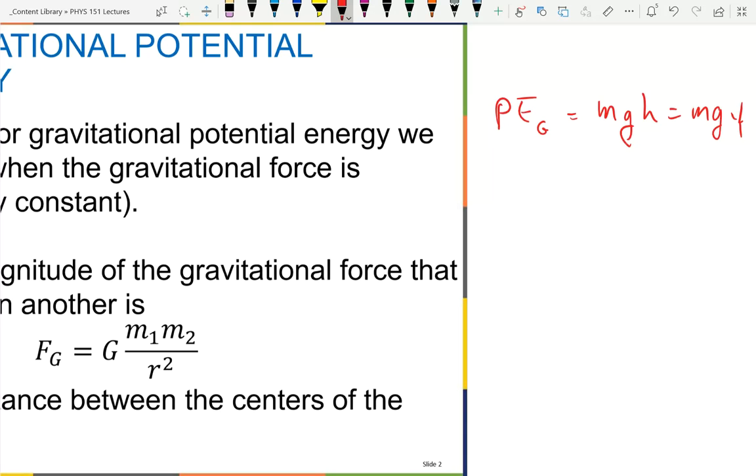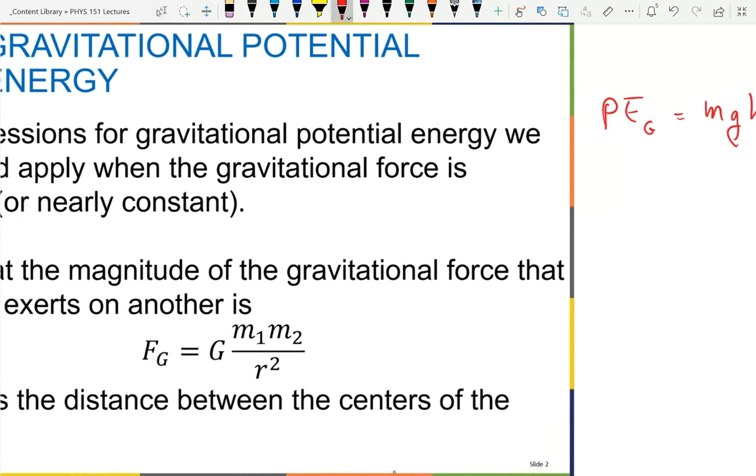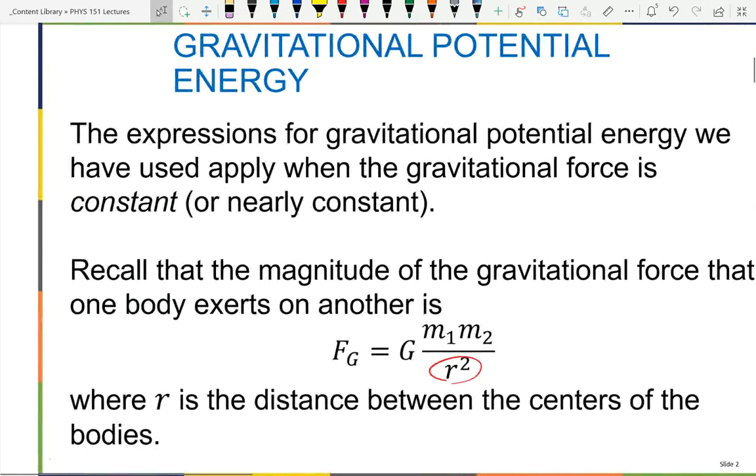But if you are in the International Space Station orbiting the Earth, then the acceleration of gravity is somewhere around 90% or 80% of what it is on the surface of the Earth. So this wouldn't be right anymore. You've changed the distance too much. That's because the force of gravity depends on separation from the center. So if you're doing something like planets orbiting other planets, clearly lowercase g is not going to be the right thing to use.